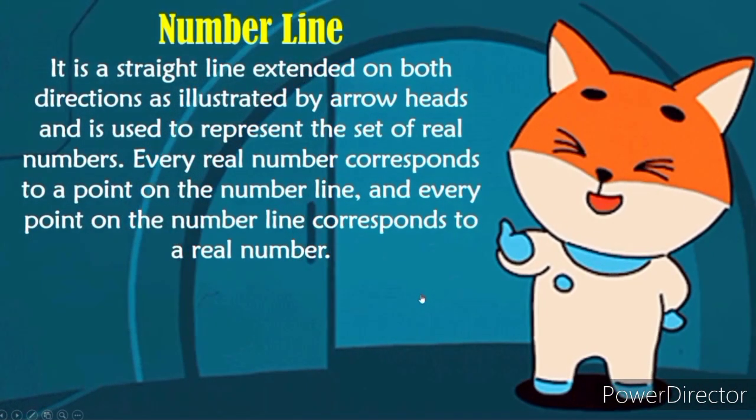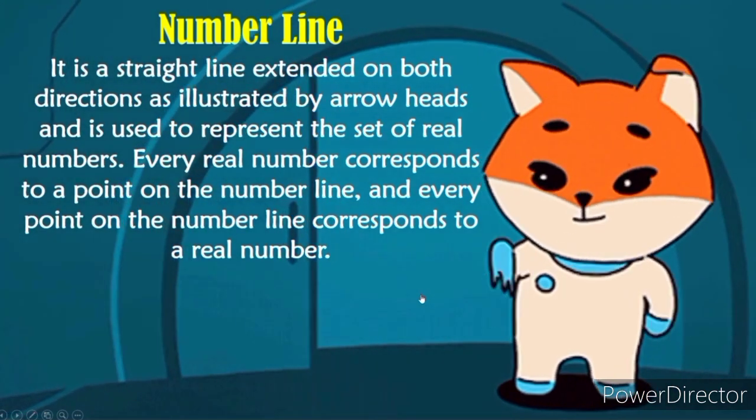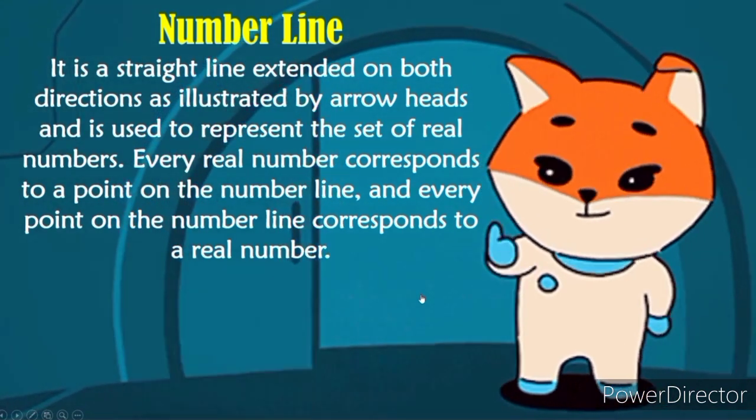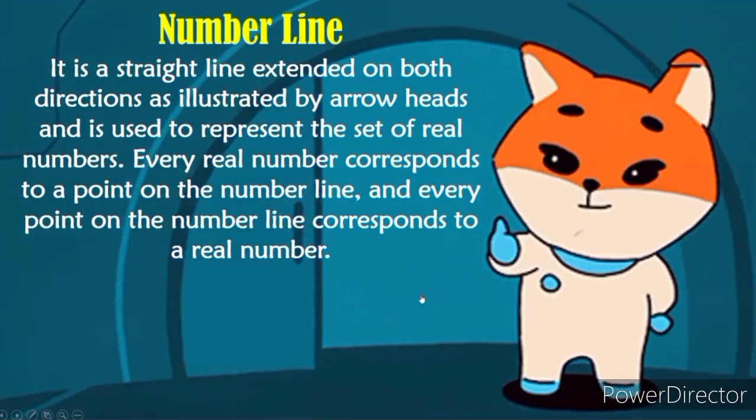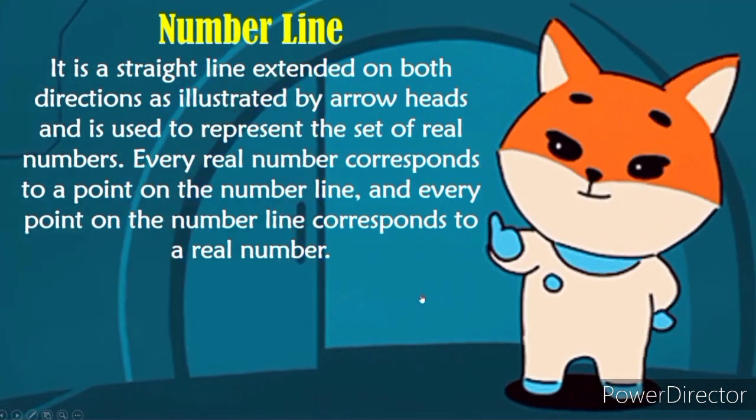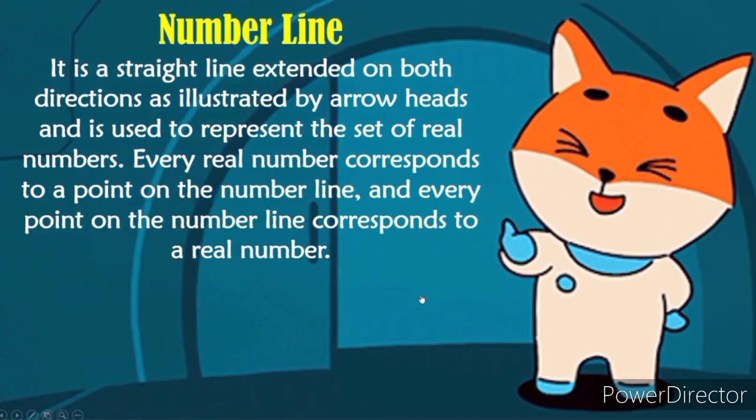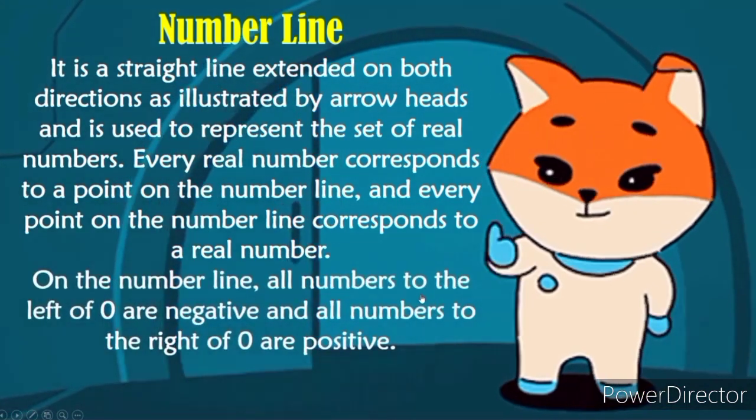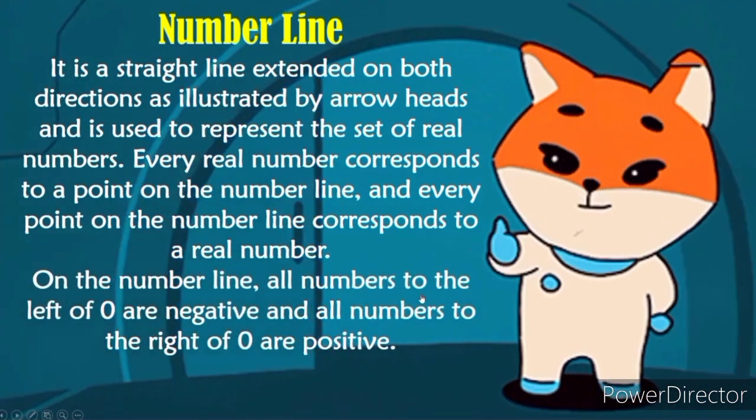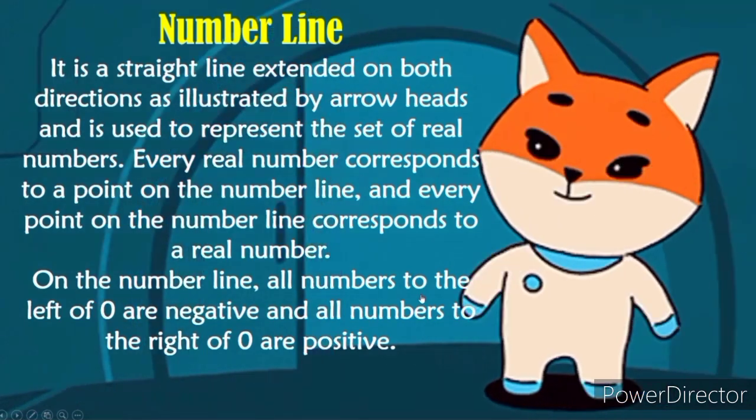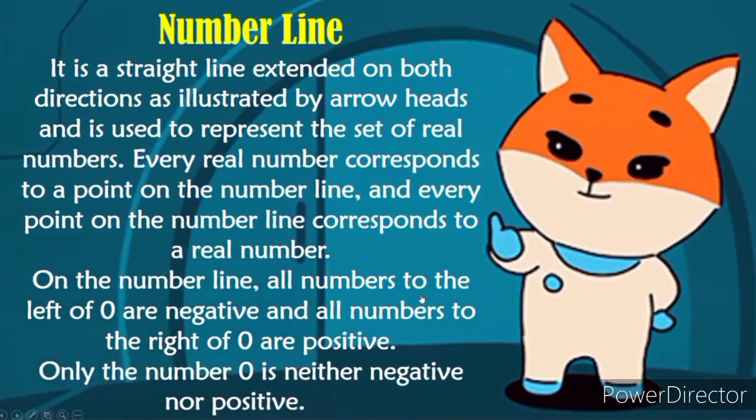Now we have number line. It is a straight line extended on both directions as illustrated by arrowheads and it is used to represent the set of real numbers. Every real number corresponds to a point on the number line and every point on the number line corresponds to a real number. On the number line, all numbers to the left of 0 are negative and all numbers to the right of 0 is positive. Only the number 0 is neither negative or positive.